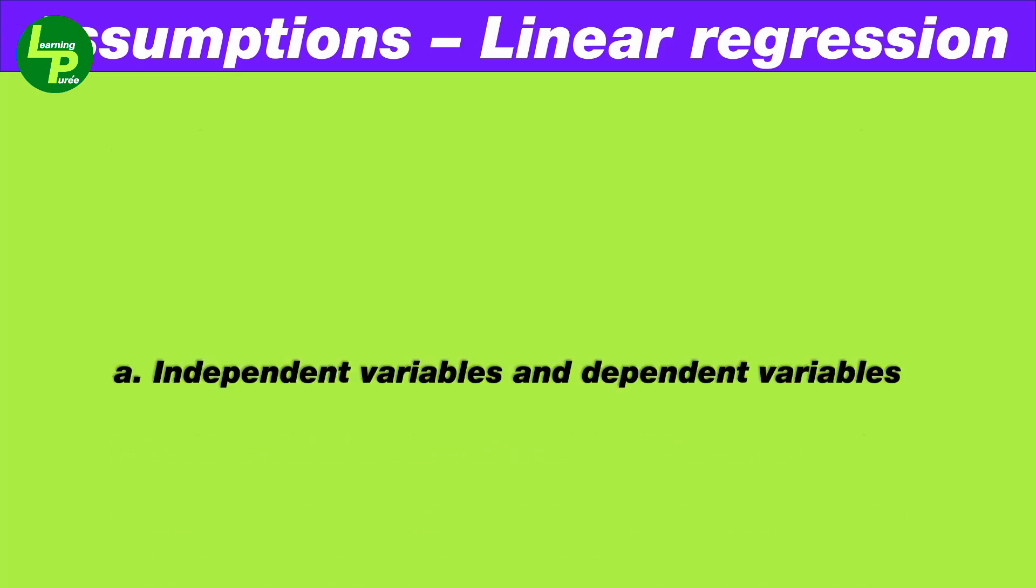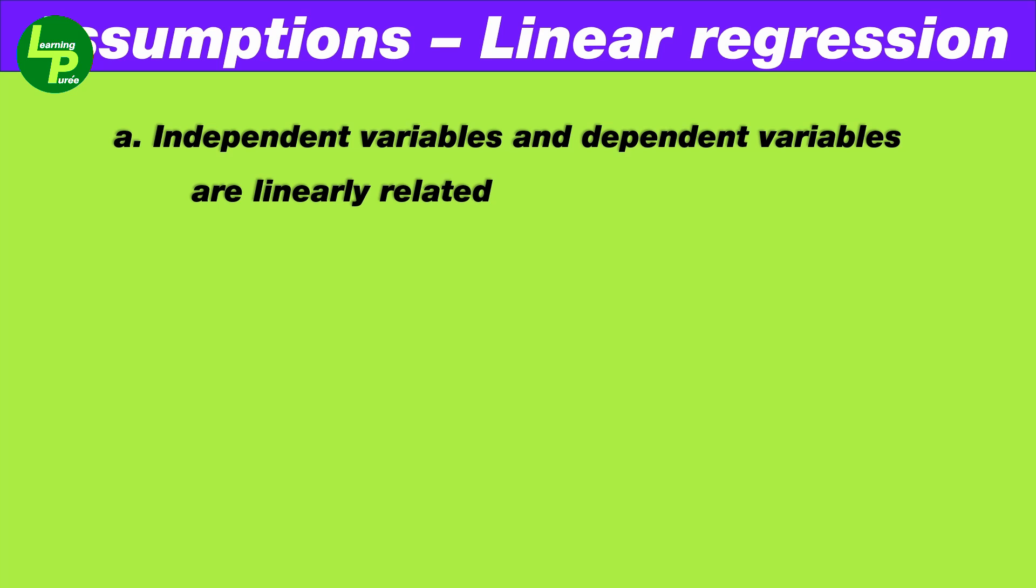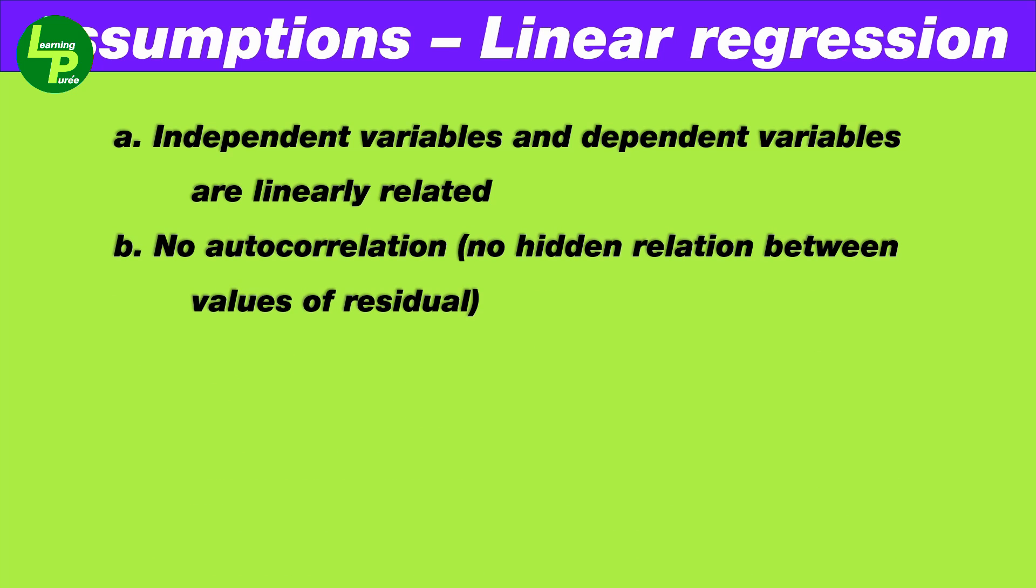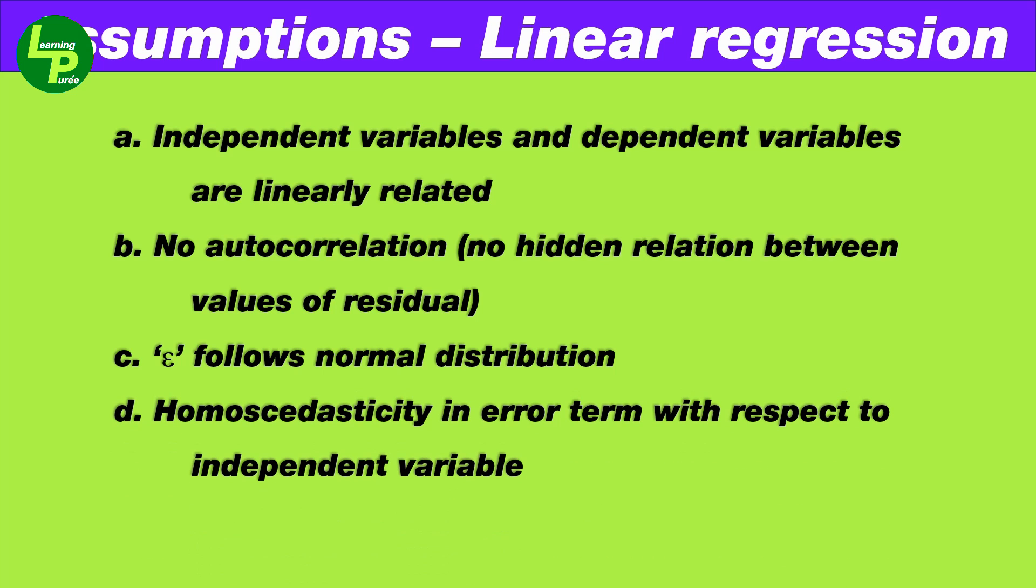However, any linear regression follows certain assumptions for the success of its validity and they are as follows. A: The relationship between independent variables and dependent variables is linear. B: There are no hidden relationships between the variables. In other words, there is no autocorrelation between the different values of residual. C: Error term or the residuals follow a normal distribution. D: The size of error does not change significantly across the values of the independent variable. E: No significant outliers in the dataset.